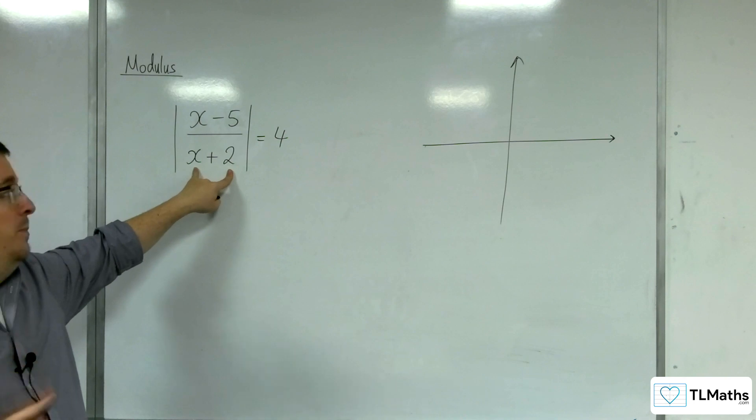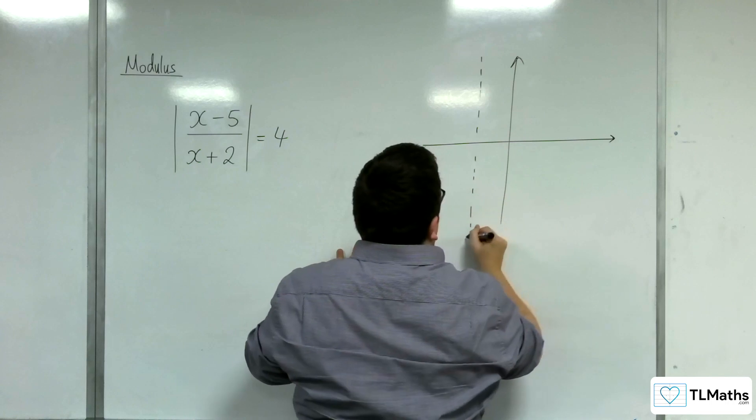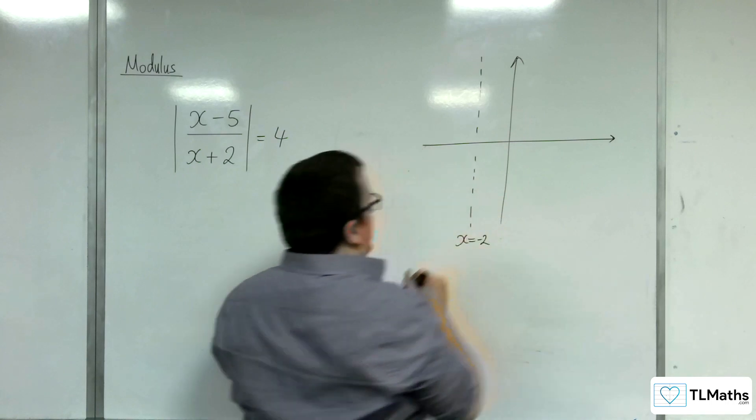First of all, x equals minus 2 is going to be a vertical asymptote, because that would make the denominator 0.